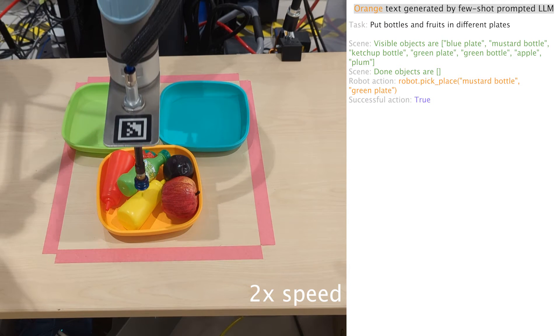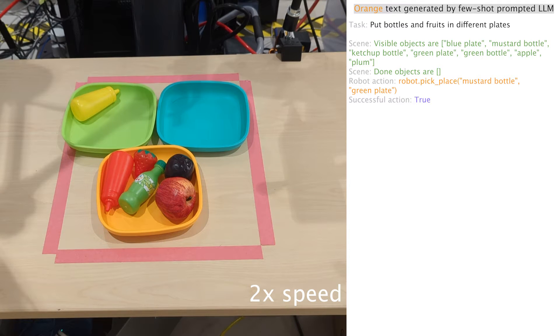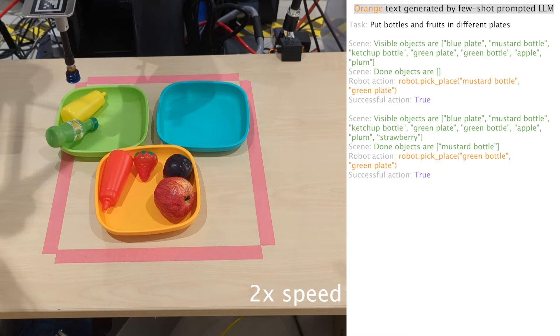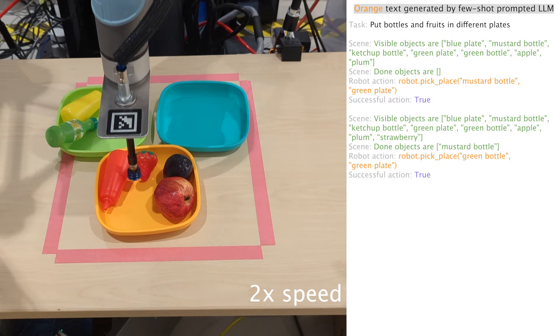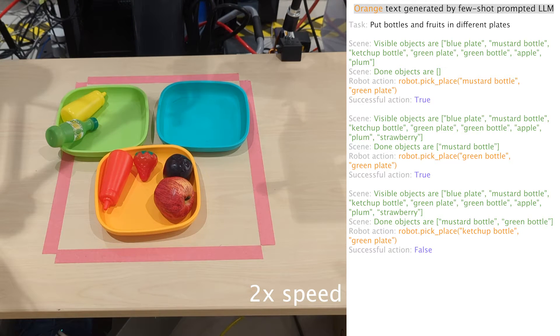And this task here is to put the bottles and the fruits in different plates. Without being trained on this task, the language model planner produces a correct plan for this long-horizon task. However, when trying to place the ketchup bottle on the green plate, it fails during the first time, but succeeds at the second attempt, and it was able to successfully complete the task in the end.